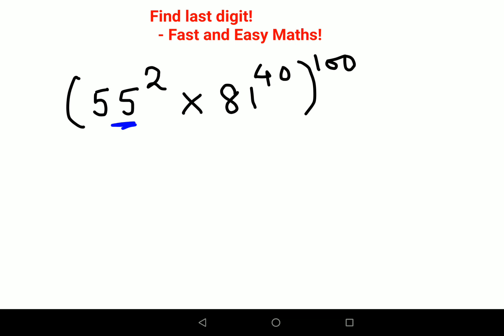You will be able to find the last digit of all of these complicated multiplications in seconds. All you have to do is focus on this particular digit, the five and the one.